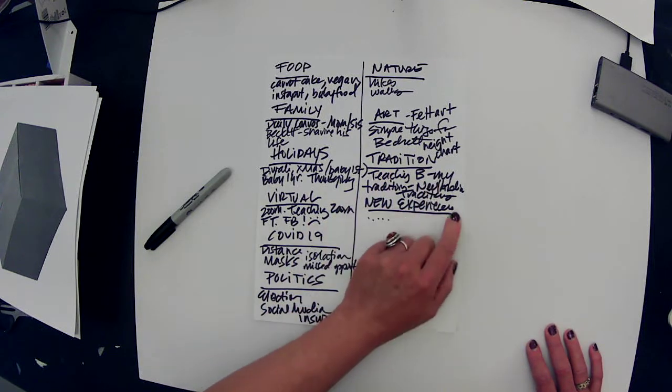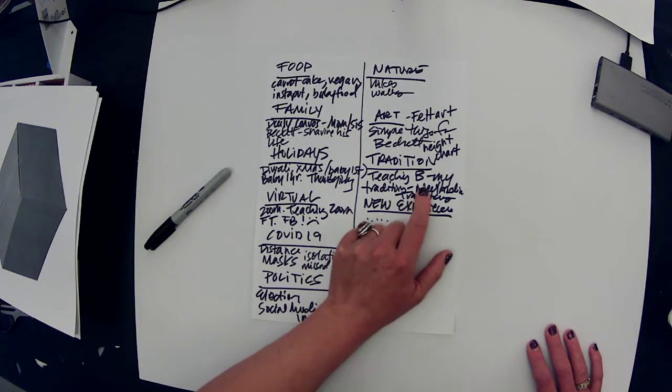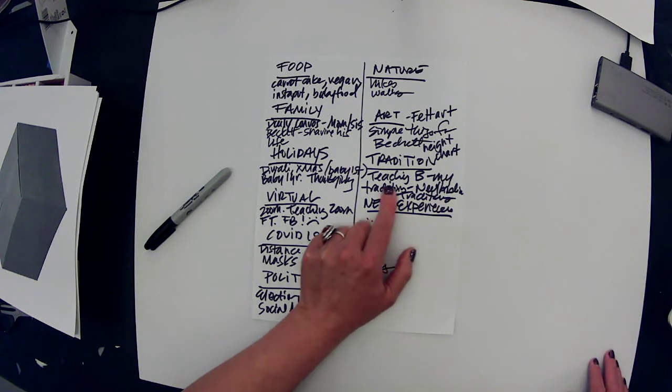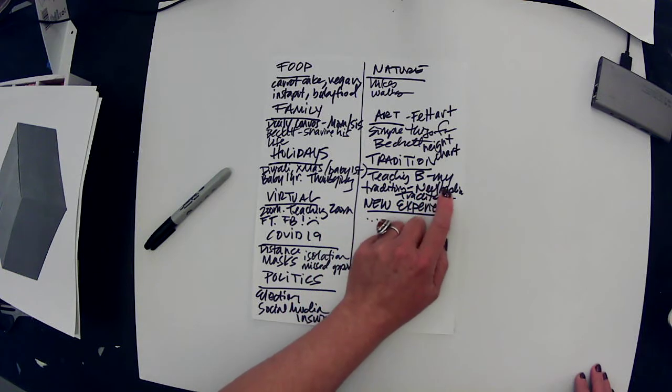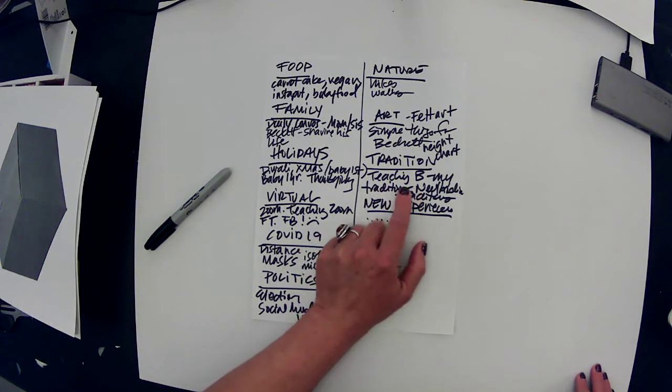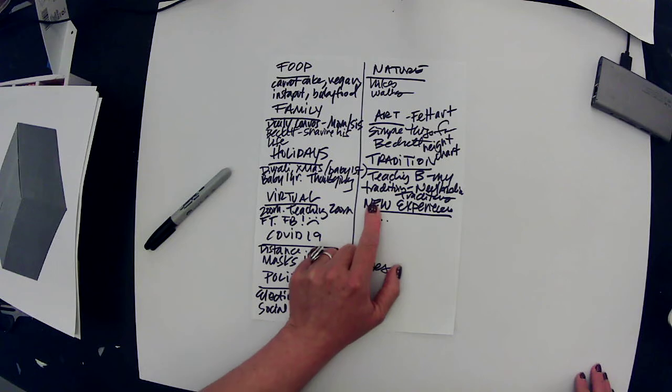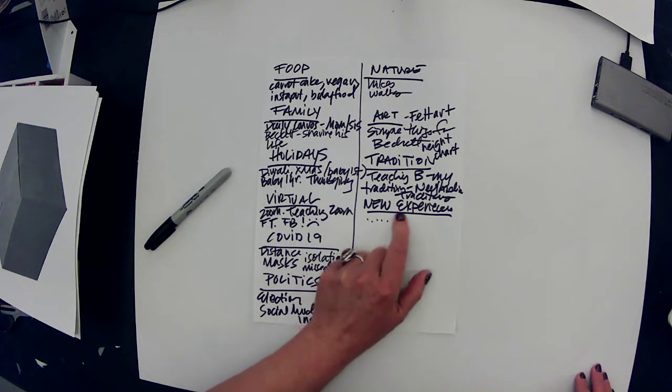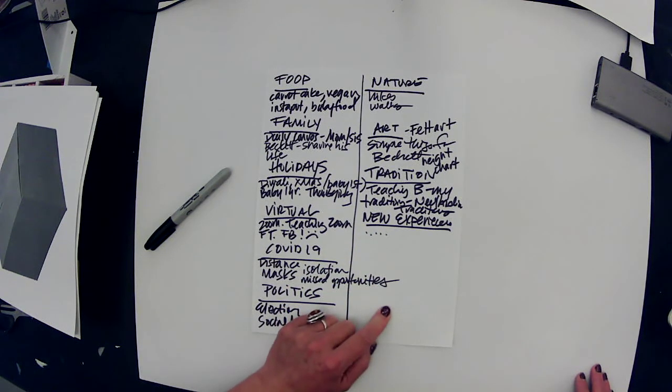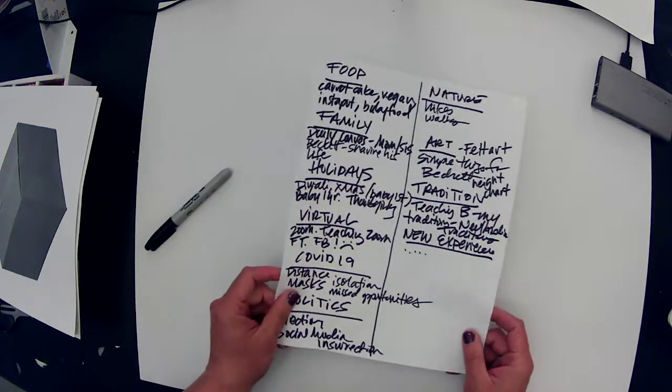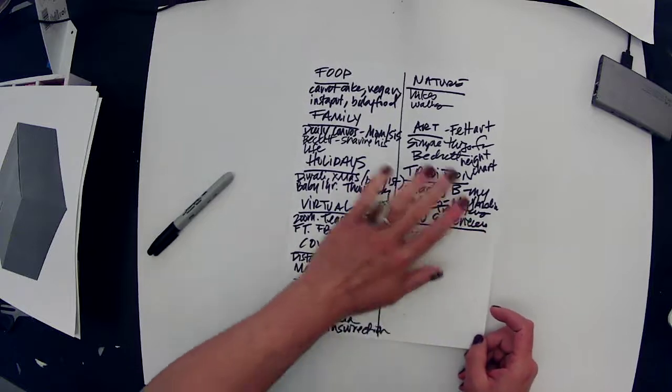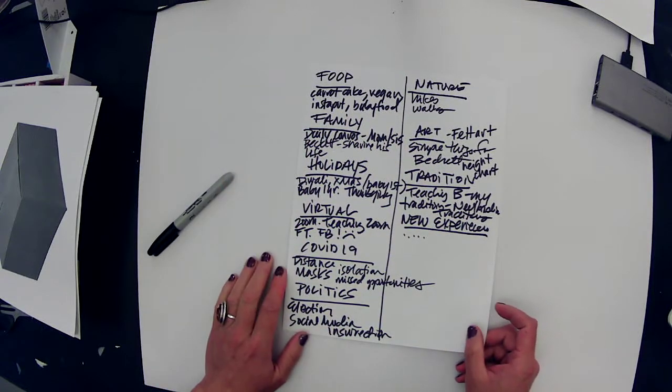Tradition. Teaching your children about things or carrying out traditions at home with your family. Maybe they became more meaningful to you this year because you were with your family more. And new experiences. What were some of the new experiences that you had this year? You don't have to put all of this in your box, there's a lot, but it might help you to make a list so that you can really get a sense of what's important to you.